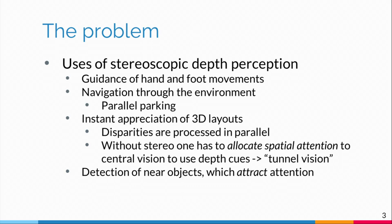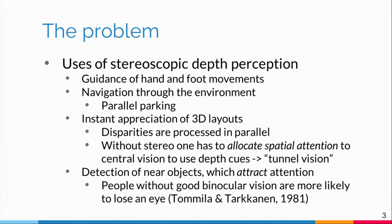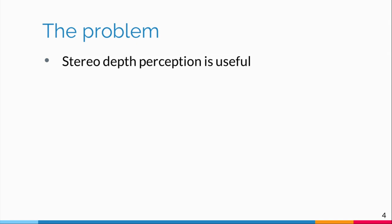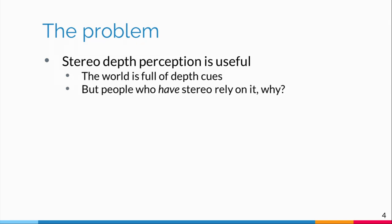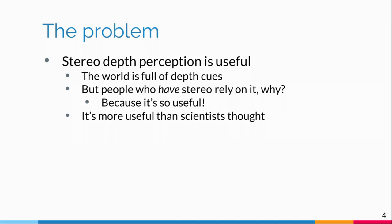Near objects will attract attention — they are salient. A thing with what we would call a crossed disparity, because it's near, will draw your attention to it. That's one reason why people without good binocular vision are more likely to lose an eye — something projectile will come and hit them. Stereo perception is useful. It is true the world is full of depth cues, but people who do have stereo rely on it because it's so useful.